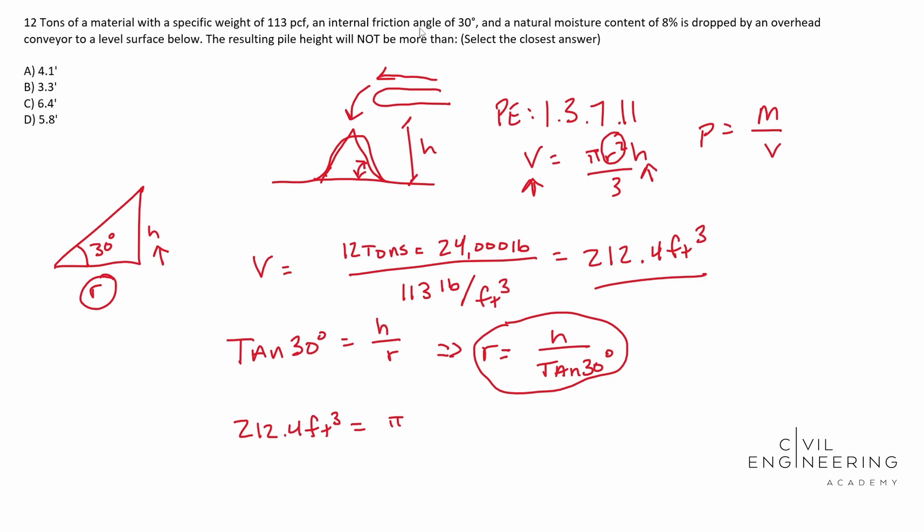Remember our R is H over the tangent of 30. H over the tangent of 30. That needs to be squared. Don't forget the square, you can miss a problem by that. Times H over three.